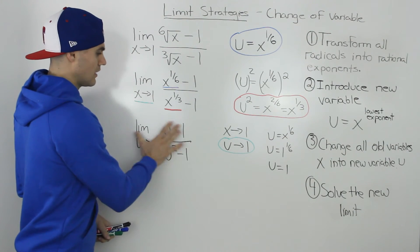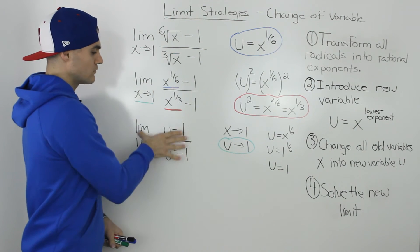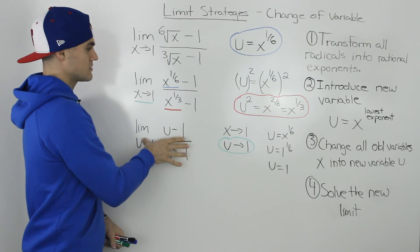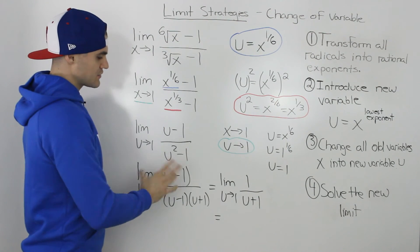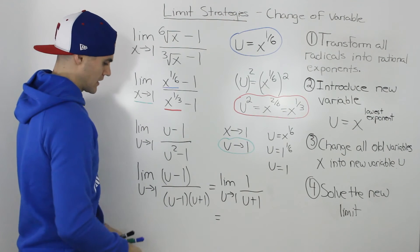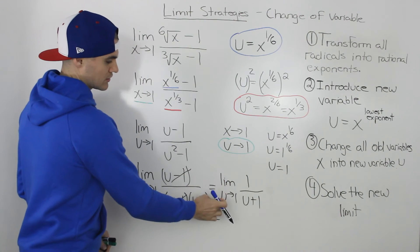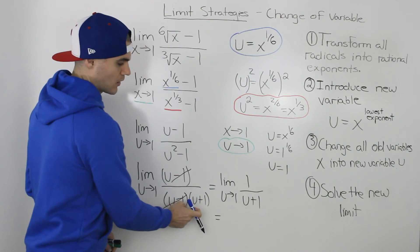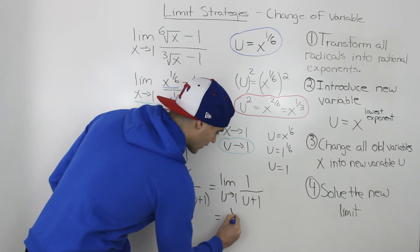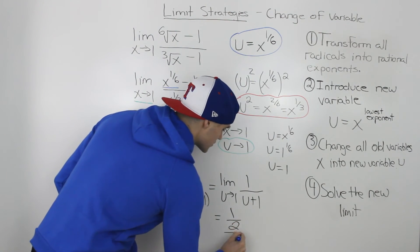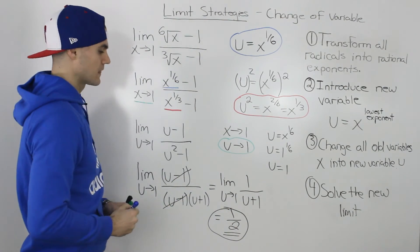This new limit is much nicer to work with and has the same value as the original. We can factor the denominator — it's a difference of squares: u squared minus one equals u minus one times u plus one. The u minus one terms cancel, leaving the limit as u goes to one of one over u plus one. Substituting u equals one gives one over two, so our final answer is one half.